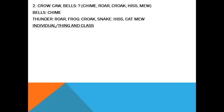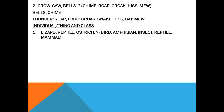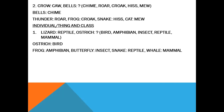Individual and its class. Lizard — reptile. Ostrich — bird. Deer — what? Options: amphibian, insect, reptile, mammal. Ostrich is a bird — the biggest bird in the world. Frog — amphibian. Butterfly — insect. Snake — reptile. Whale — mammal.